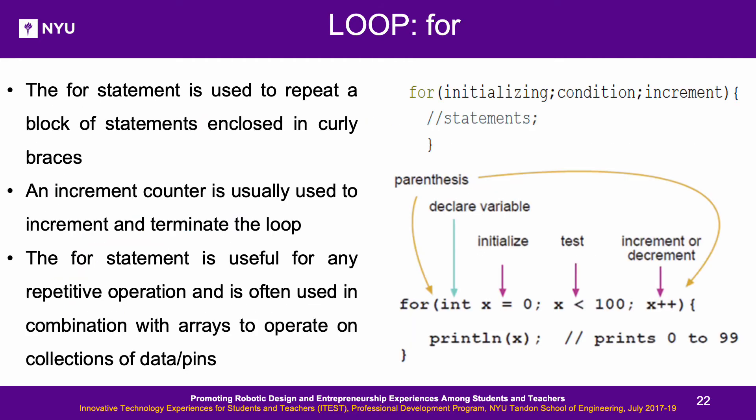For Loop: A for loop is a control flow statement used for iteration. An increment counter is used to increment and terminate the loop. The for statement is useful for any repetitive operation and is often used with arrays to operate on collections of data or pins. A for loop contains three parts: an initializing function, a condition function, and an increment or decrement function. In this example, 0 to 99 is printed on the Serial Monitor.